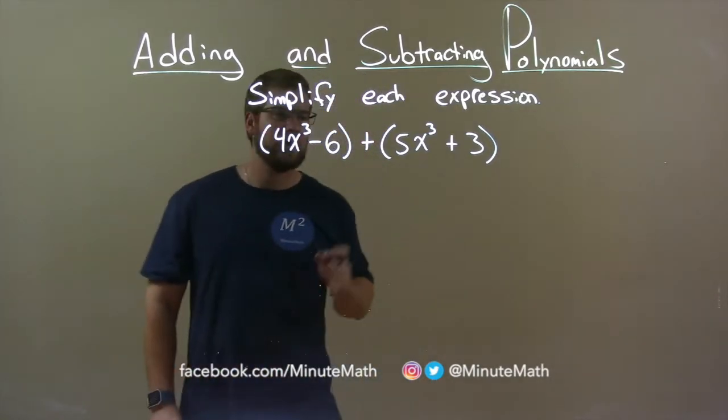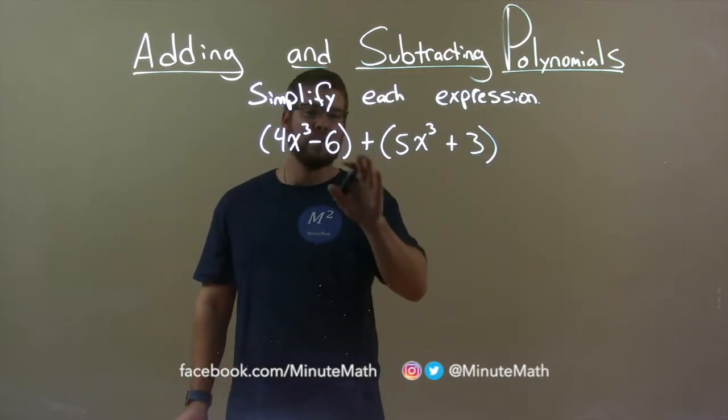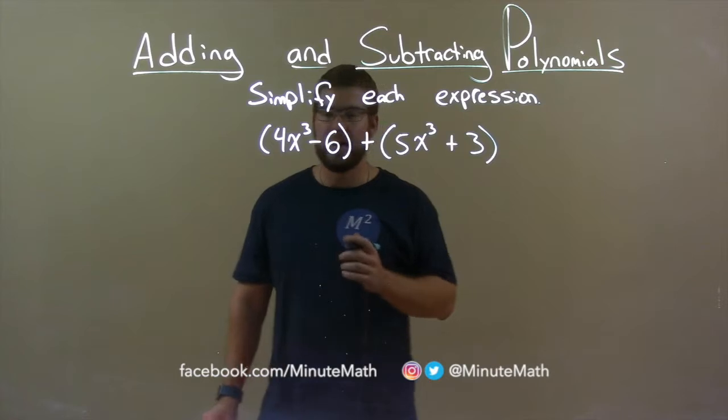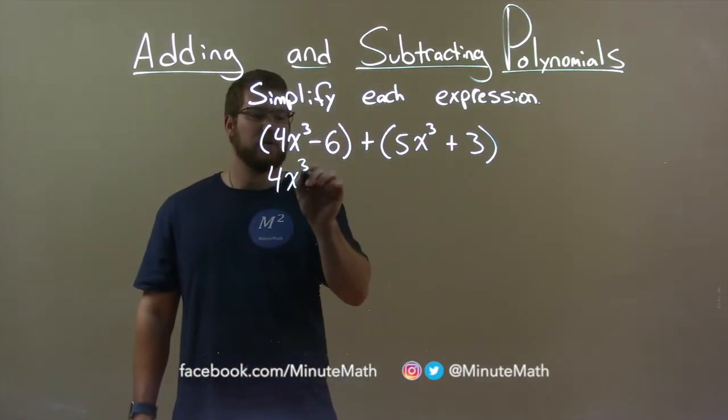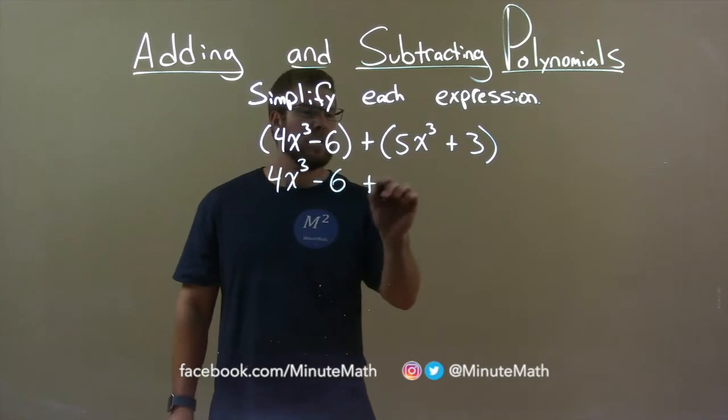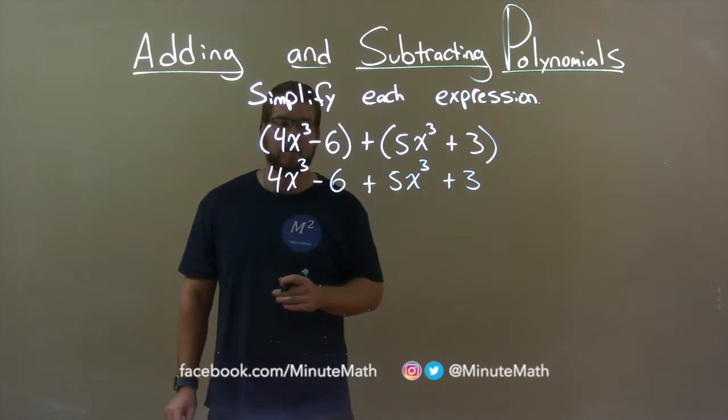There's a plus sign between these two parentheses, and so what that tells me is I don't really need the parentheses. So I'm going to rewrite this without the parentheses: 4x to the third minus 6 plus 5x to the third plus 3.